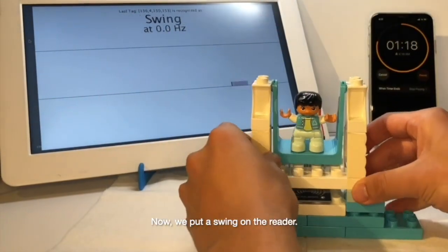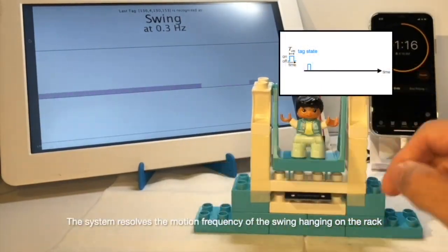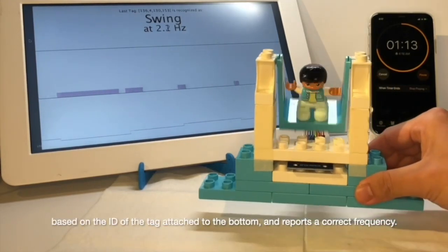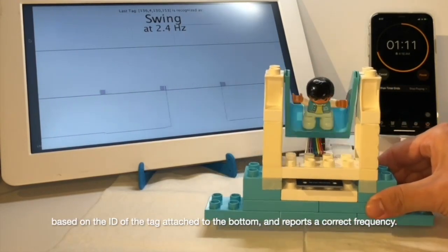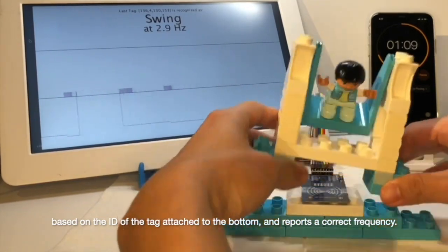Now, we put the swing on the reader. The system resolves the motion frequency of the swing hanging on the rack based on the ID of the tag attached to the bottom and reports a correct frequency.